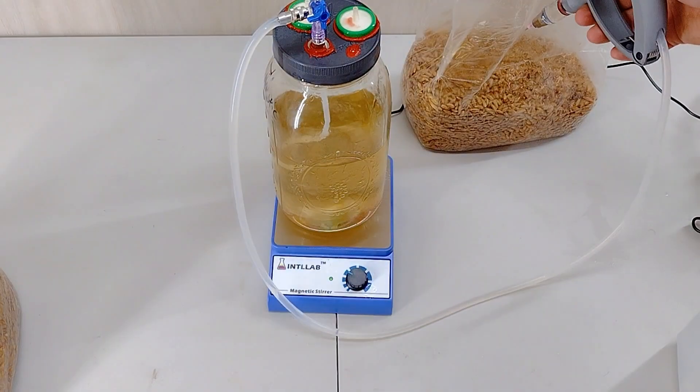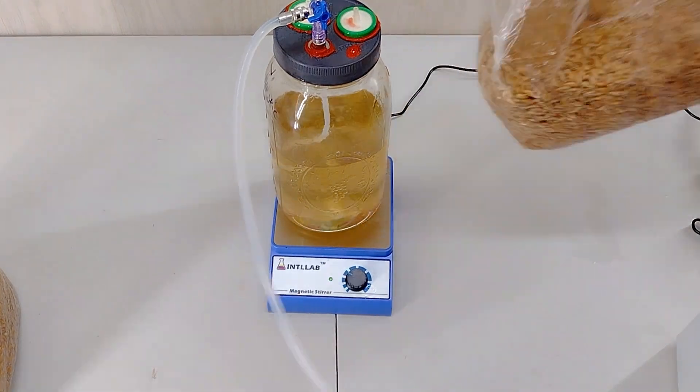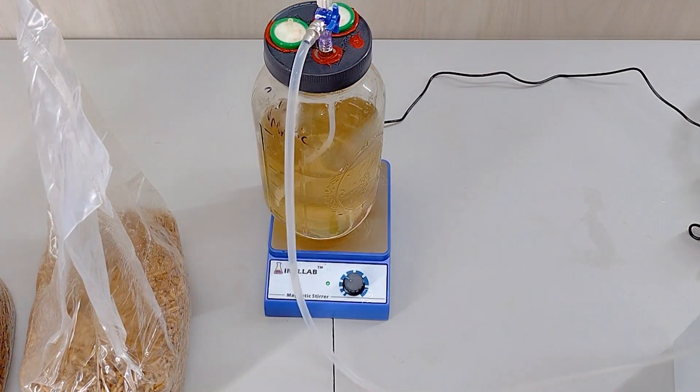When you're done, you just close your valve, spray it with some isopropyl alcohol, and put the cap back on there, and then it's set and ready for the next time you want to use it.